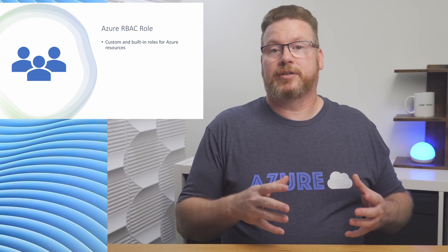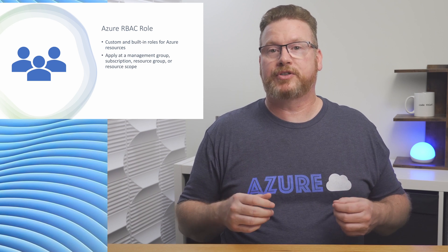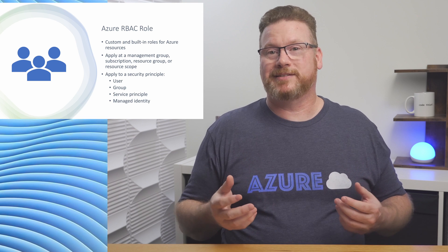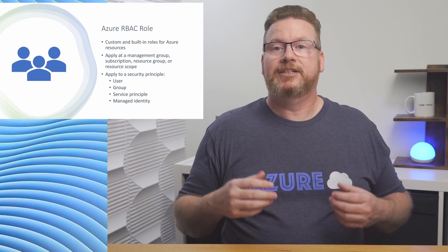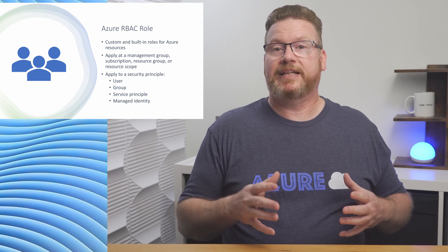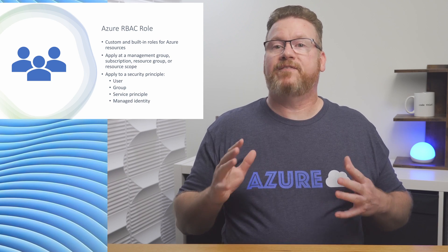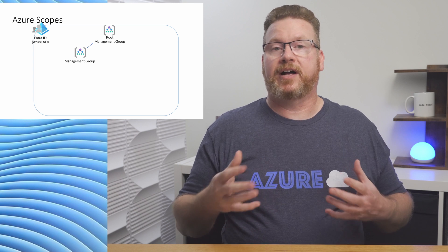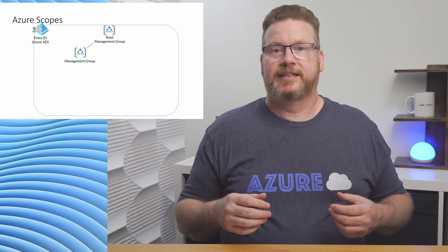Azure roles are custom and built-in roles that apply at an Azure resource scope. An Azure role may be Subscription Owner with rights to do anything on an Azure subscription including manage access, Backup Operator with rights to manage backups, or Virtual Machine Contributor with rights to manage virtual machines — there are many additional built-in roles available. With Azure RBAC, we apply roles to a security principal at a scope. A security principal is a user, group, service principal, or managed identity. For example, we could use a managed identity to allow Azure Automation to shut down VMs by giving it the Virtual Machine Contributor role. Every instance of Azure starts with a root management group — we can have other management groups, but there's always at least one root.